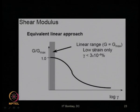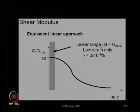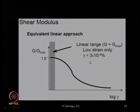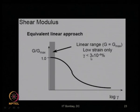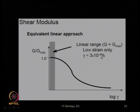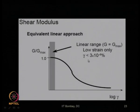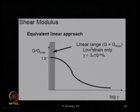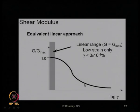For the linear range of analysis, G equals G_max, valid only for very low strain problems where shear strain is within about 3×10⁻⁴ percent. In that range, G/G_max is approximately 1, and degradation of the material with increasing strain need not be considered.